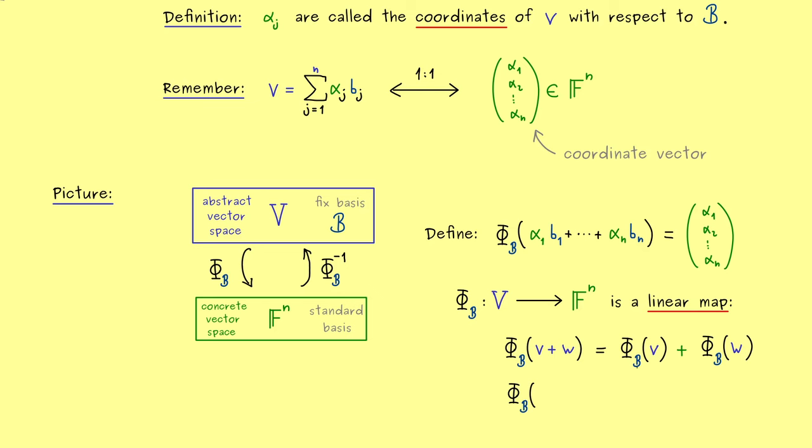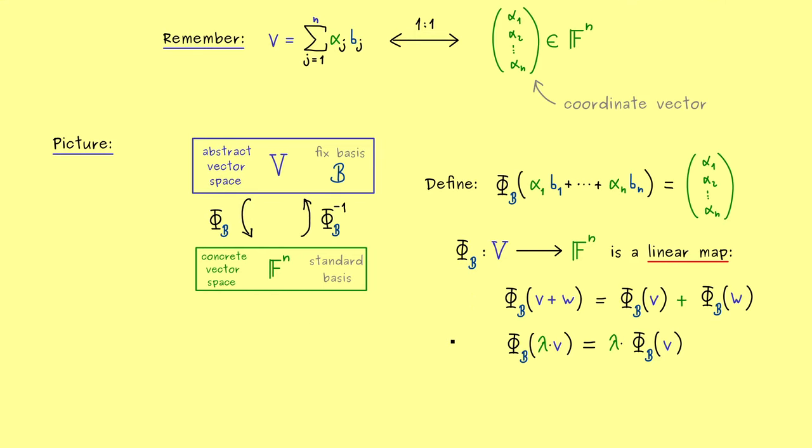Okay but linear means exactly two things. Namely first the one with the vector addition and the other one with the scalar multiplication. This means if you have a scalar lambda here you are also allowed to pull it out. So again a similar thing. It does not matter if you first do the scaling and then the map or first the map and then the scaling. Still again the only difference is which scaling, which scalar multiplication we take. Okay so now you know this important definition of phi B and I can also tell you the name of the map.